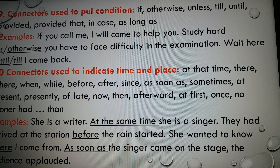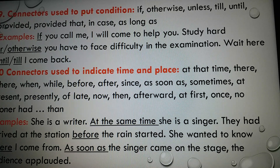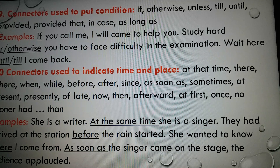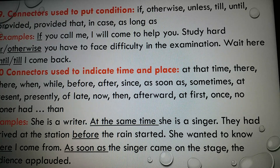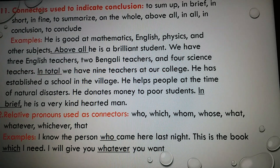Number ten: connectors used to indicate time and place. Some connectors are used to show or indicate time and place, like: at that time, where, when, while, before, after, since, as soon as, sometimes, at present, presently, of late, now, then, afterwards, at first, once, no sooner...than. Examples: 'She is a writer; at the same time, she is a singer.' 'They had arrived at the station before the train started.' 'She wanted to know where I come from.' 'As soon as the singer came on the stage, the audience applauded.'